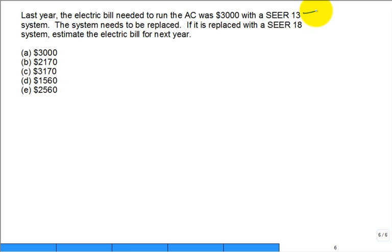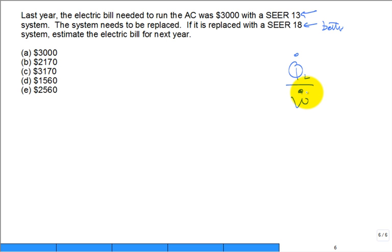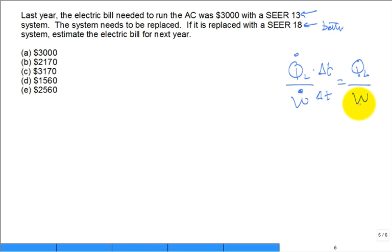What is better — an 18 SEER or a 13 SEER? 18 SEER is better because for the same rate of cooling, you have less power input to the system. Multiplying by a time period gives the total heat removed and the total electricity used. SEER is inversely proportional to the amount of electricity used over the cooling season — so a higher SEER means lower electric bills over the summer.